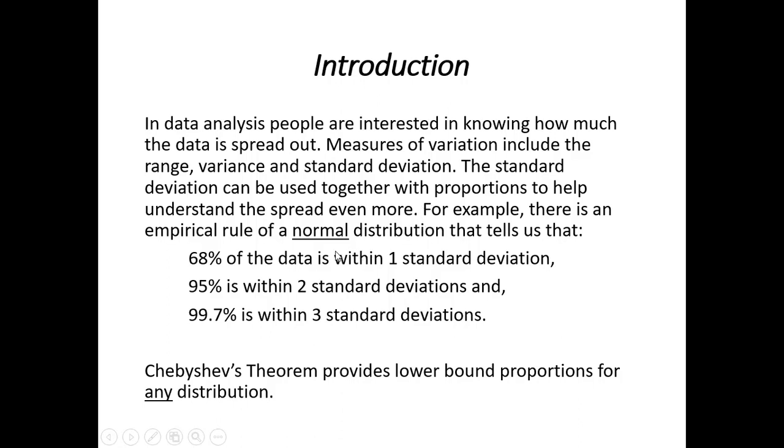For example, there's a well-known empirical rule of the normal distribution that tells us exactly 68% of the data is within one standard deviation of the mean, 95% is within two standard deviations of the mean, and 99.7% is within three standard deviations. Chebyshev's theorem provides similar but lower bound proportions for any distribution.